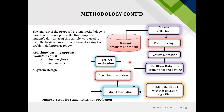The analysis of the proposed system methodology is based on a quality sample of student data sets, used to form the basis of our approach for solving the problem using machine learning — specifically Random Forest and Random Tree. This diagram shows the steps for student attrition prediction: data collection, preprocessing, feature extraction, partitioning into training and testing sets, model evaluation using our classification algorithm, and finally the attrition prediction of whether a student drops out or graduates.